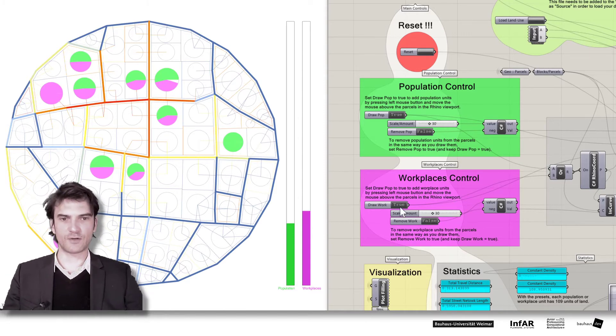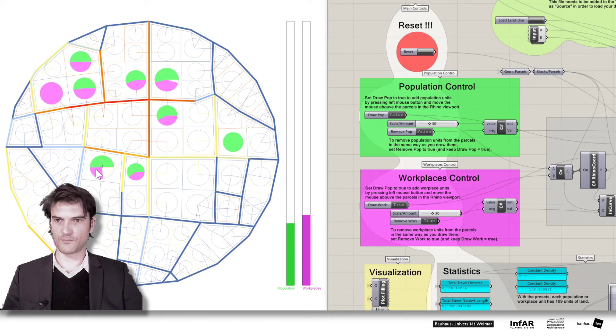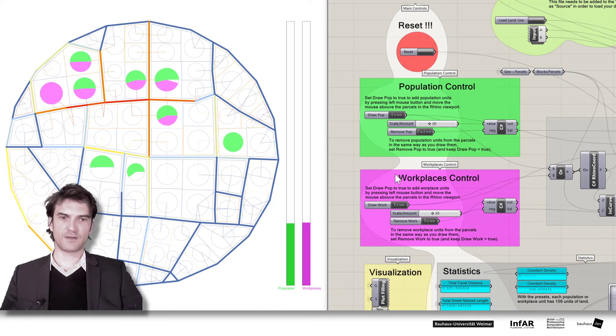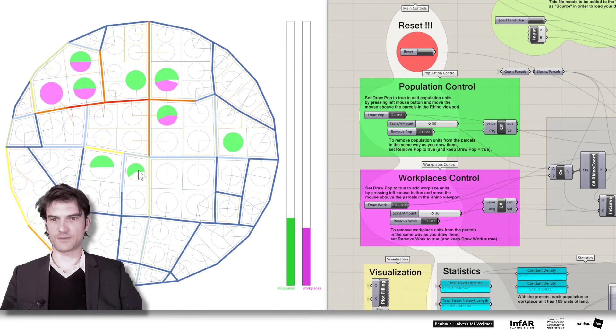If you have distributed something in a way that you don't like you can also remove them. So let's try this for the workplaces. If we set it true and we set the remove work to true as well and deactivate the population, then we remove workplaces only. So now we can remove the workplaces from this plot just by moving around your mouse while you press the left mouse button. If you activate population at the same time then what will happen is that you remove workplaces and add population units instead. And the other way around works as well. If you set this to true then you will remove workplaces. Excuse me. You remove population units and you set this to false. Nothing will happen for the workplaces. Then we can remove workplaces from here.